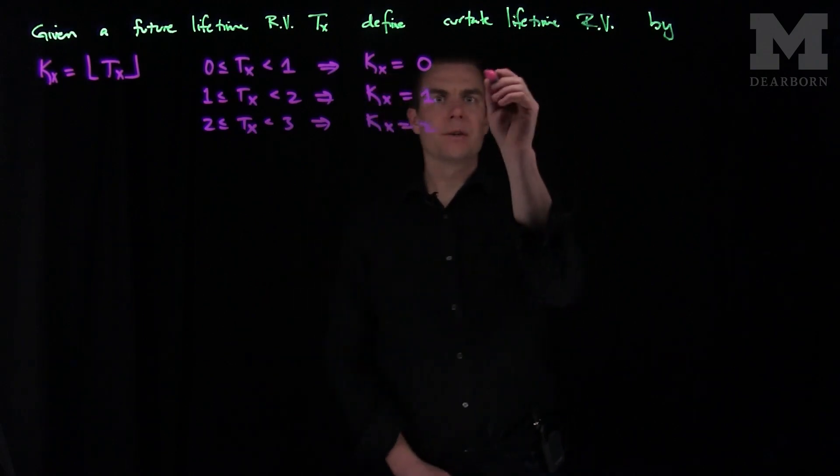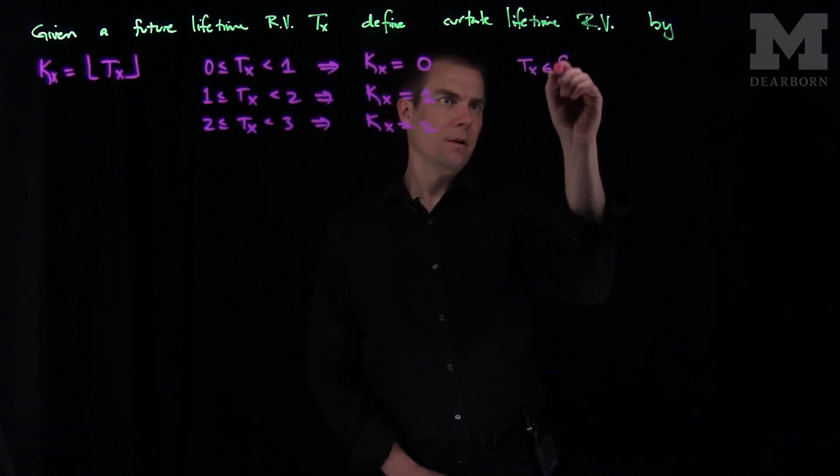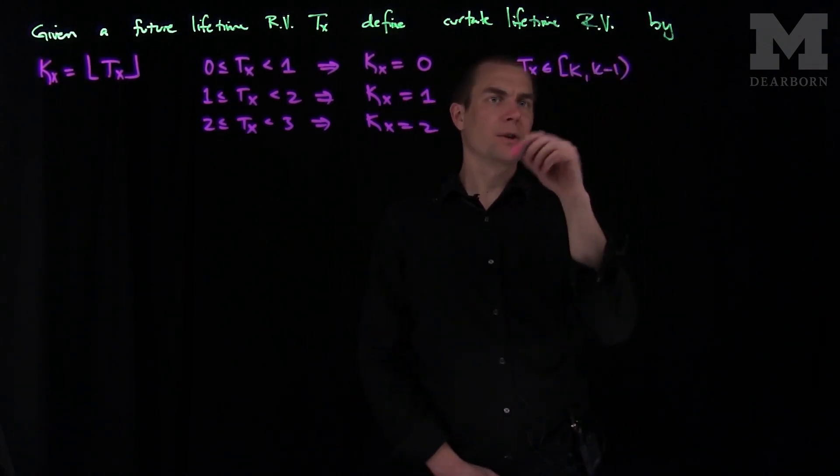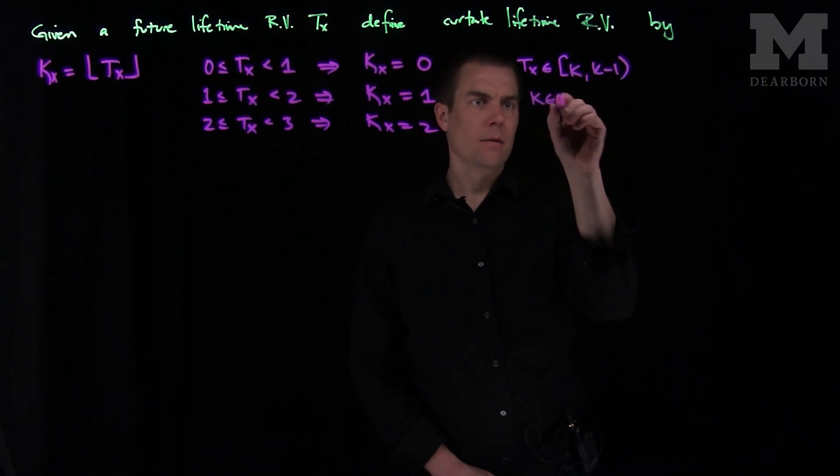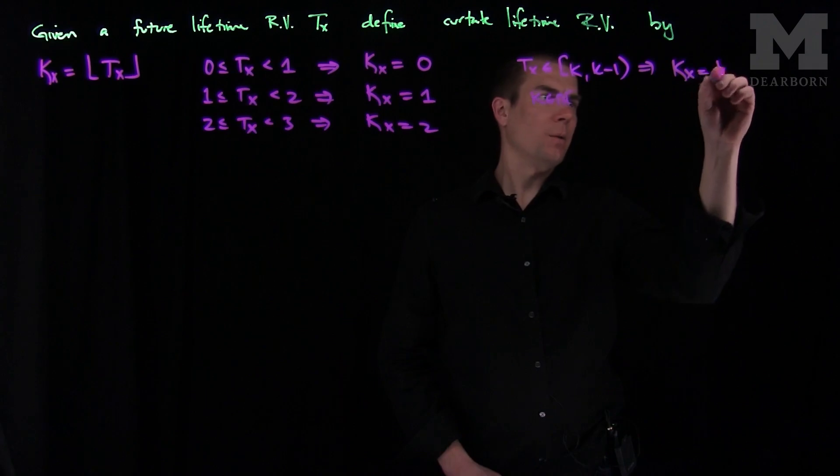In particular, we can generalize this and say that if Tx is between k and k plus 1 for a positive integer k, then this implies that kx is equal to little k.